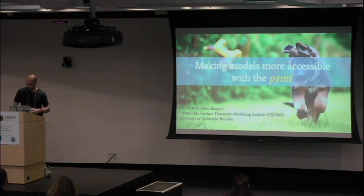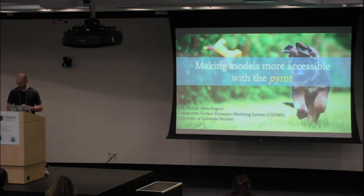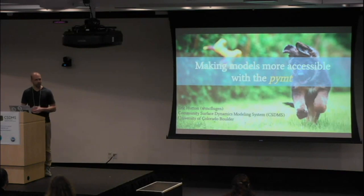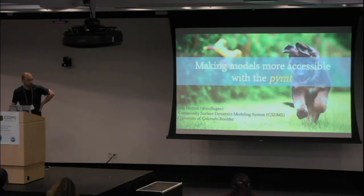We want models to be able to talk to one another, but also to talk to humans, and to play well with one another. Easily swayed or influenced is another definition of accessible — we want models to be able to do what we want them to do, we want to be able to change them and add to them. So that's what I mean by an accessible model.